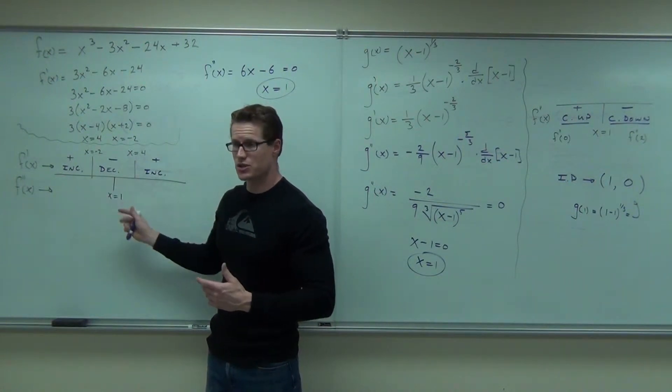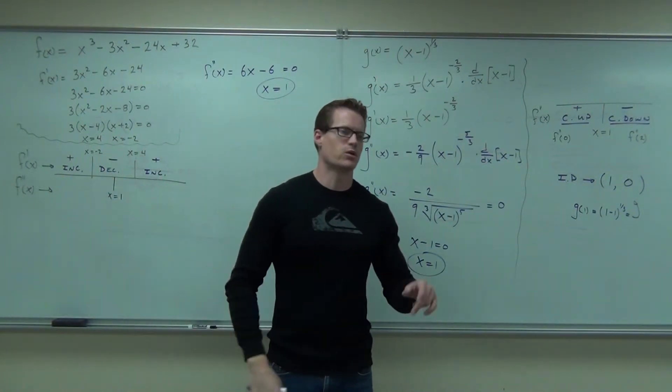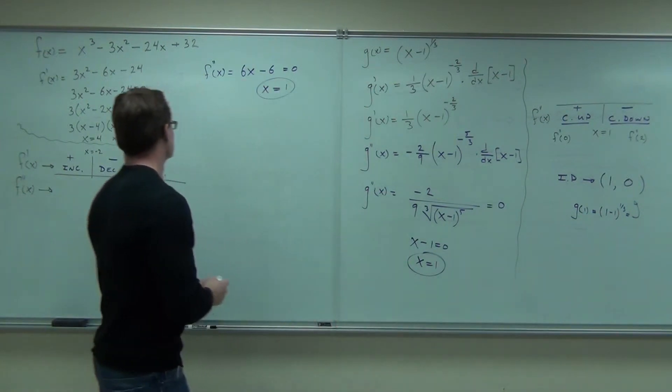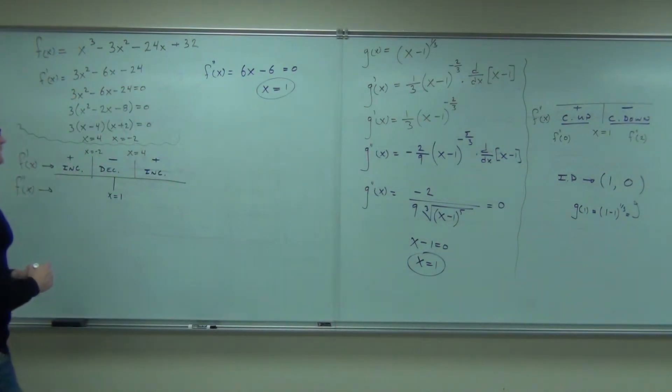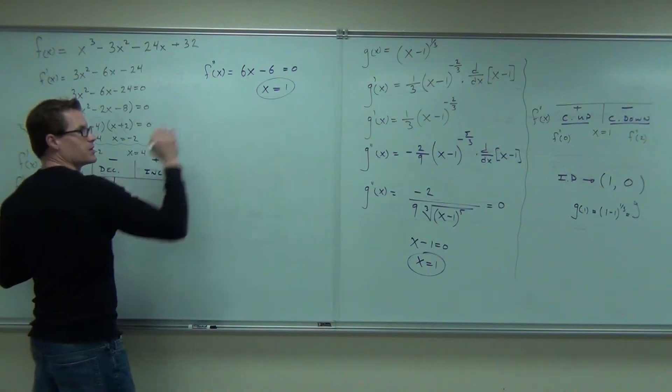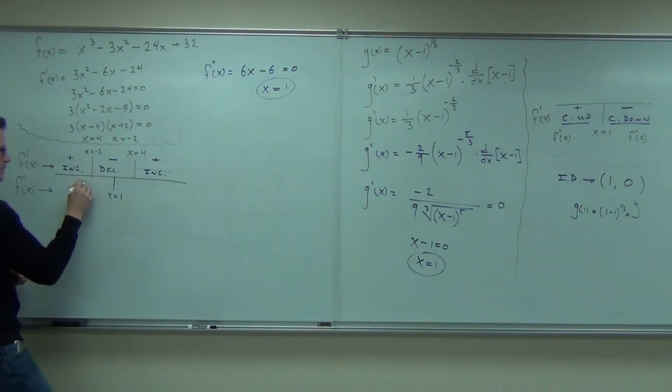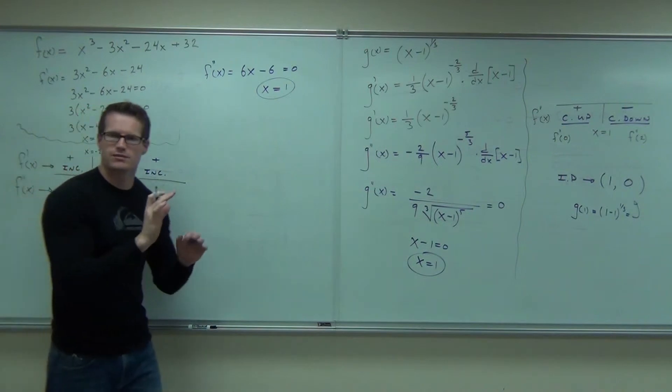Second derivative will give you the concavity. So take some numbers here, probably 0 and 2, plug them into the second derivative and tell me what you get. So we plugged in 0, you've got negative 6, and all that's negative for sure.